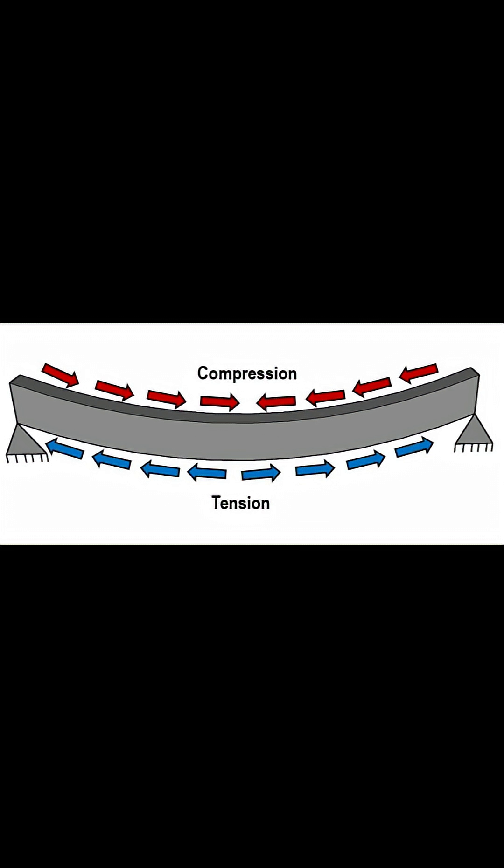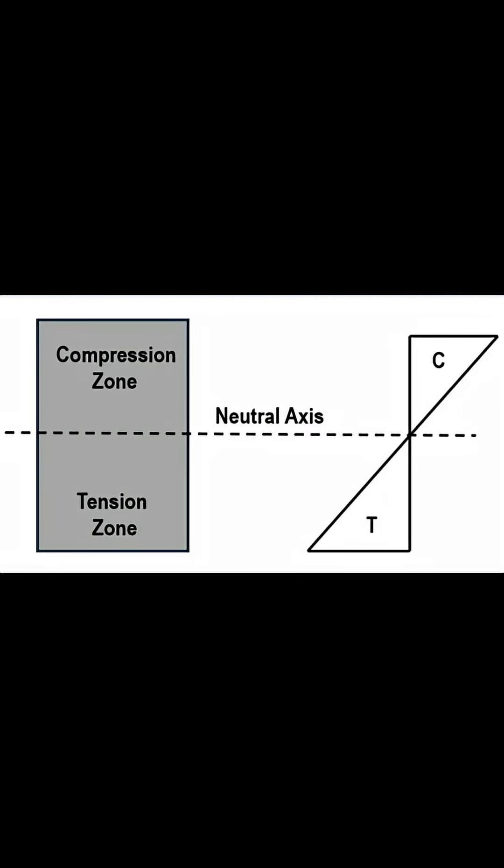When a beam bends, one side gets crushed, the other stretches, but between them lies a zero stress line. Can you guess what it is? That's the neutral axis. Neutral axis is the line where bending stress is equal to zero.